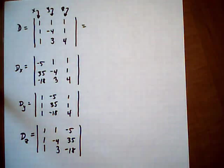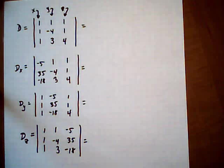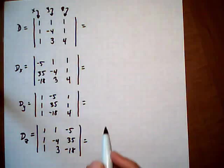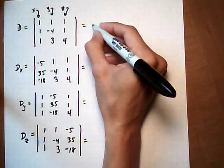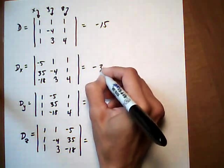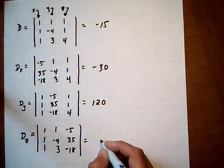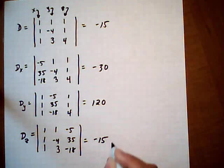Alright, then we're going to figure out what those determinants equal. If you're not sure how to do out a 3x3 by hand, watch the Evaluate a 3x3 determinant video. So this first one, D, comes up to minus 15. Dx comes up to minus 30. Dy comes up to 120. Dz is minus 15.